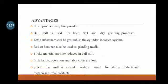Advantages: It can produce very fine powder. Ball mill is used for both wet and dry grinding processes. Toxic substances can be ground as the cylinder is a closed system. Rod or bars can also be used as a grinding medium. Sticky materials are size reduced in ball mill. Installation, operation, and labor costs are low. Since the mill is a closed system, it's used for sterile products and oxygen sensitive products.